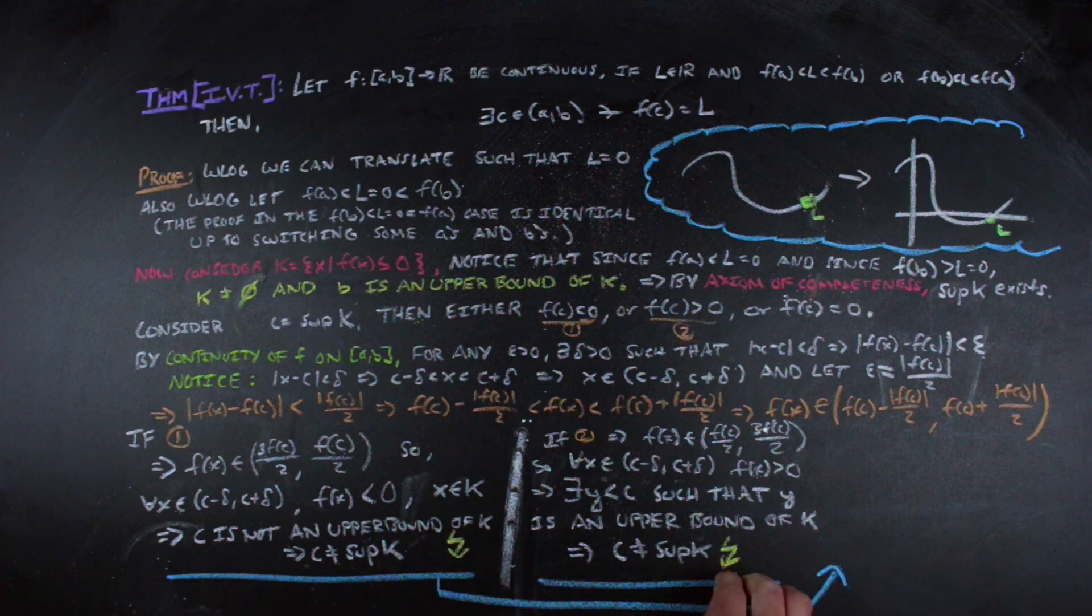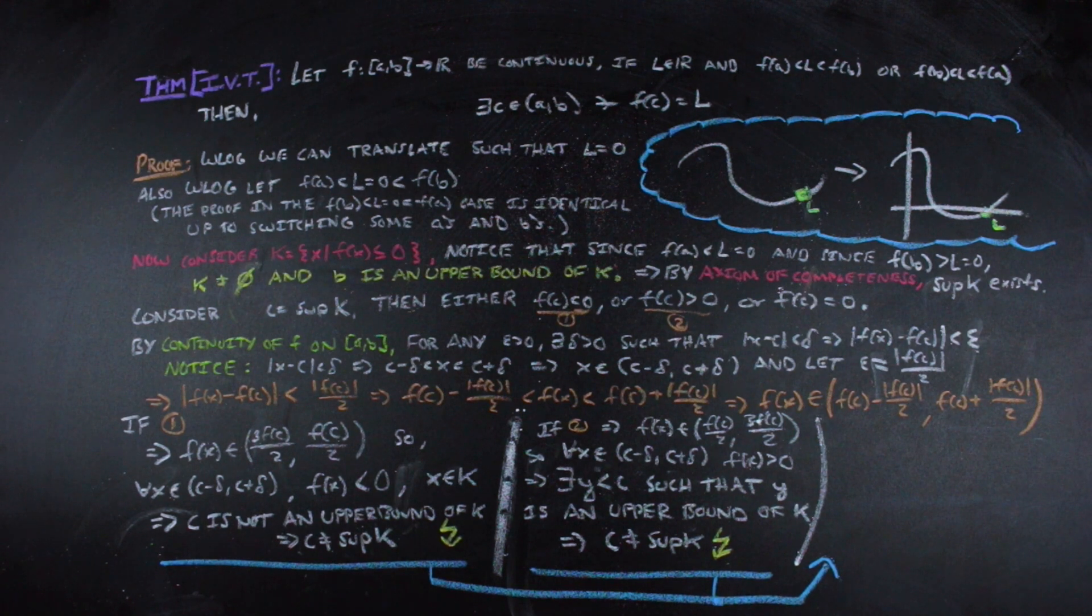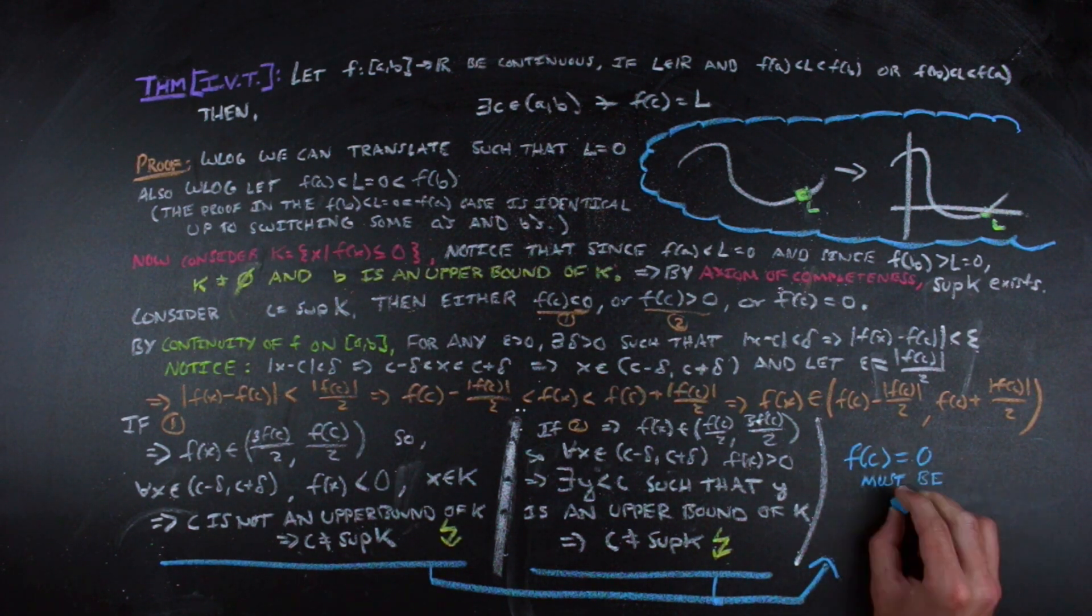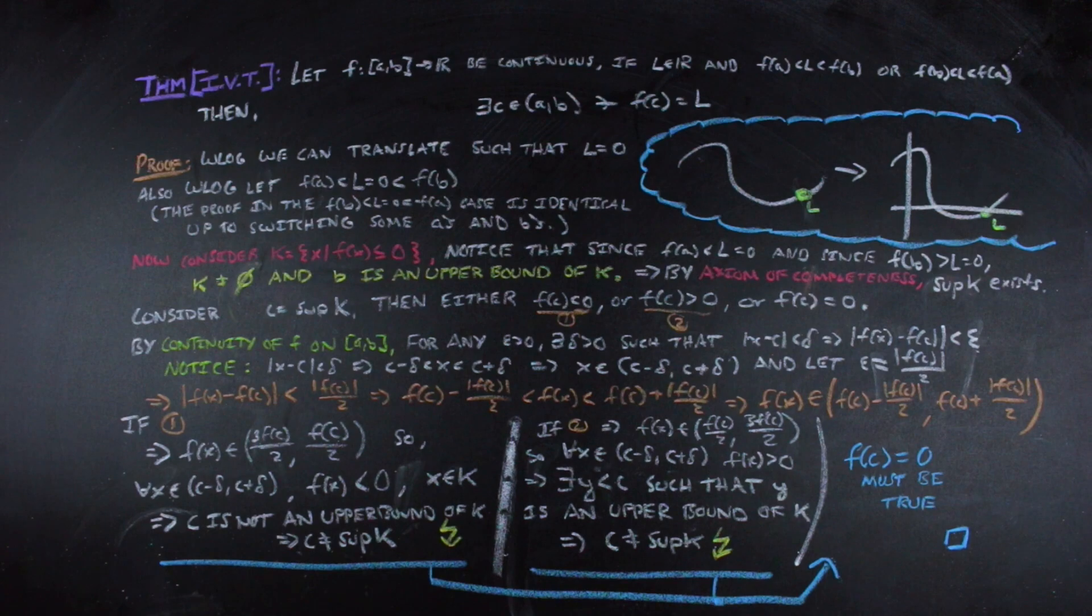But since the image of c must have been one of those three things, it must have been less than 0, greater than 0, or equal to 0, and exactly one of them. Since we ruled out the image of c being greater than 0 and the image of c being less than 0, by process of elimination, the image of c must be equal to 0, which completes the actual proof.